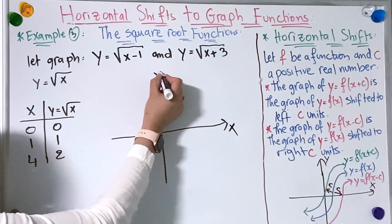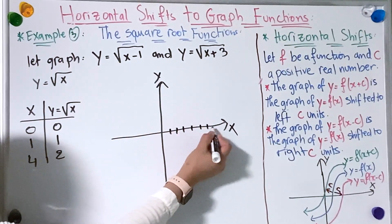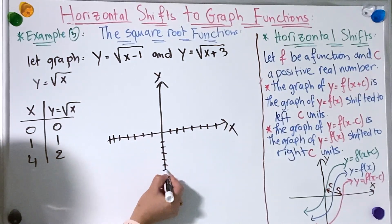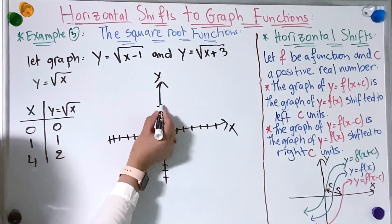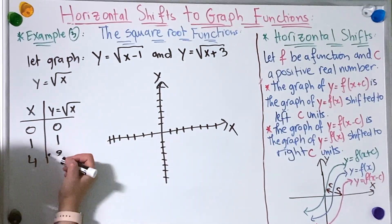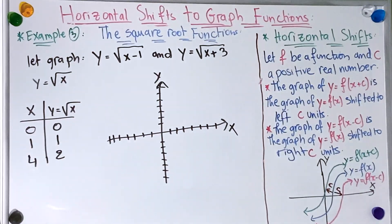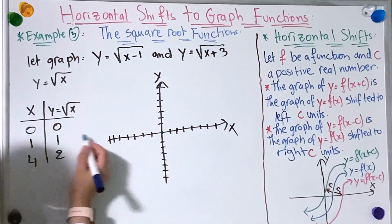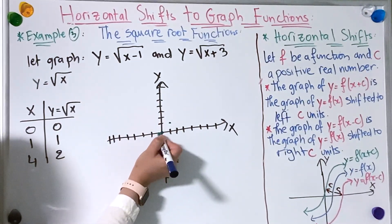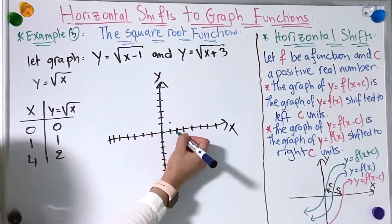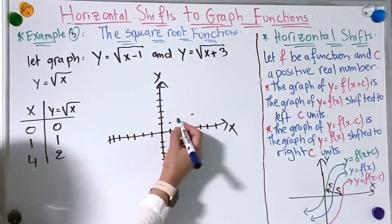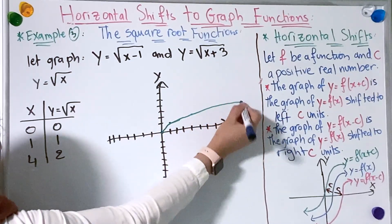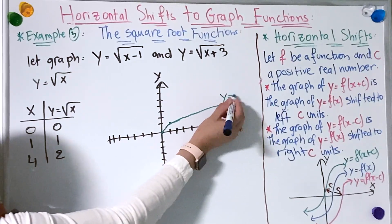Now let's graph y = √x. Plotting the points: x = 0, y = 0; x = 1, y = 1; x = 4, y = 2. Now let's connect the points. And now we have found y = √x.